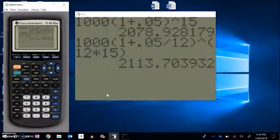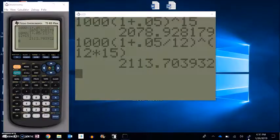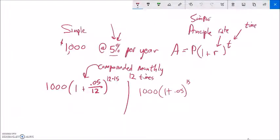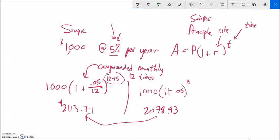And notice it's a bit bigger, which is a little counterintuitive, I think. So this one was 2078.93. And this one was 2113.71. So just compounding that 12 times made it grow faster. It's interesting, even though it's a 12th of the rate, it happens so many more times that it grows faster.